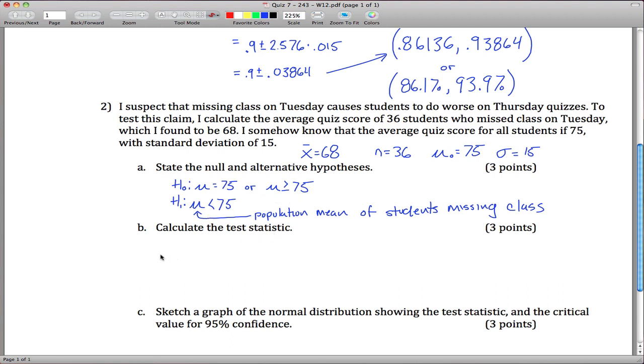Calculate the test statistic. The test statistic will be a z-score. The reason it's a z-score is because we know sigma, and the way you calculate it is x-bar minus mean divided by the standard deviation divided by the square root of n.